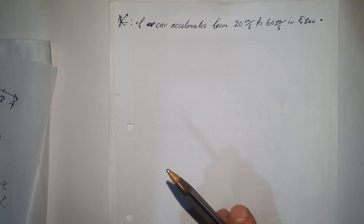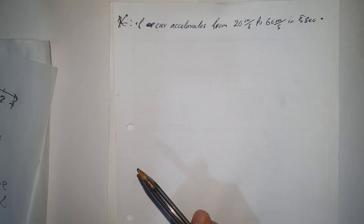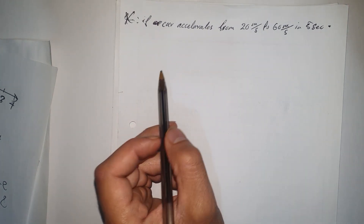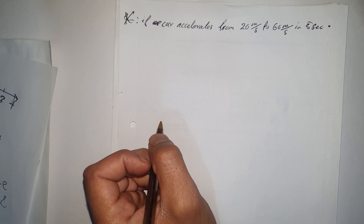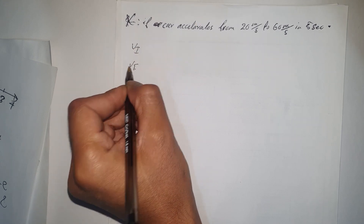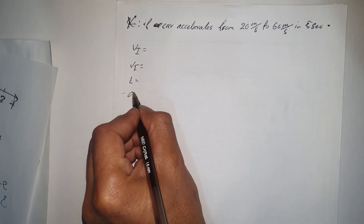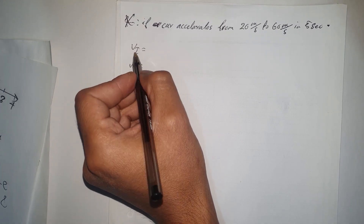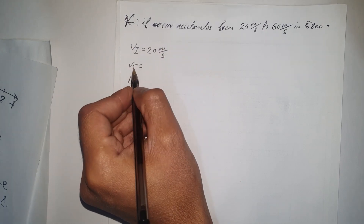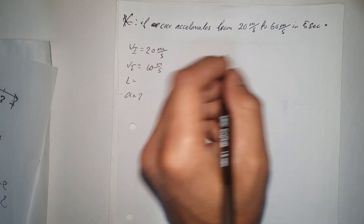Second example: a car accelerates from 20 miles per hour up to 60 miles per hour in 5 seconds — calculate the acceleration. From the example: initial velocity = 20 mph, final velocity = 60 mph, time = 5 seconds, and we need to find acceleration.